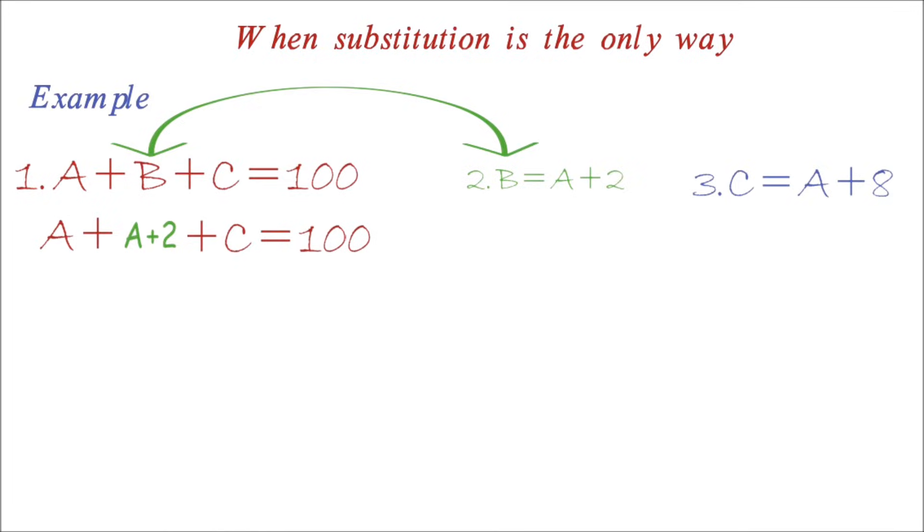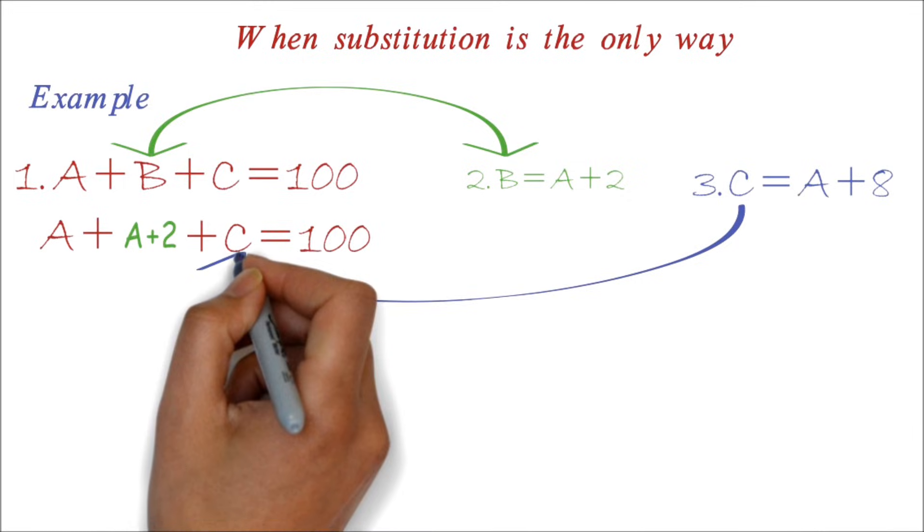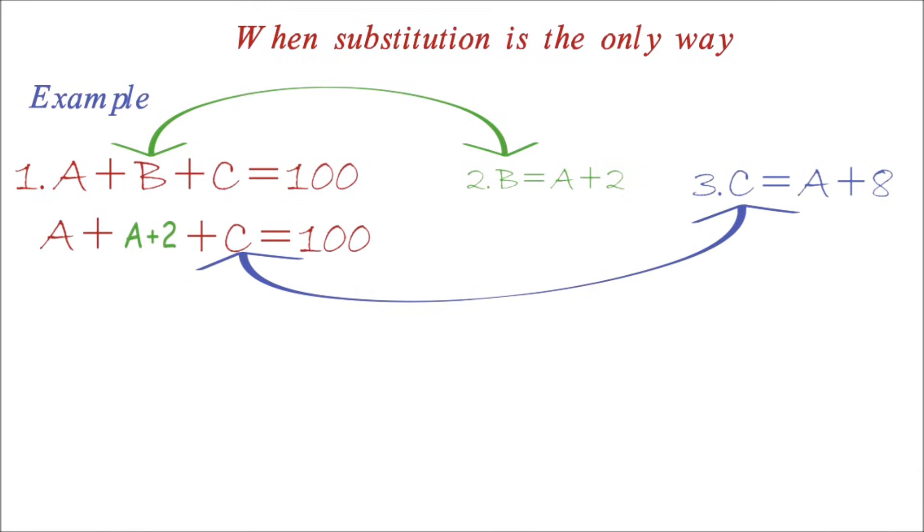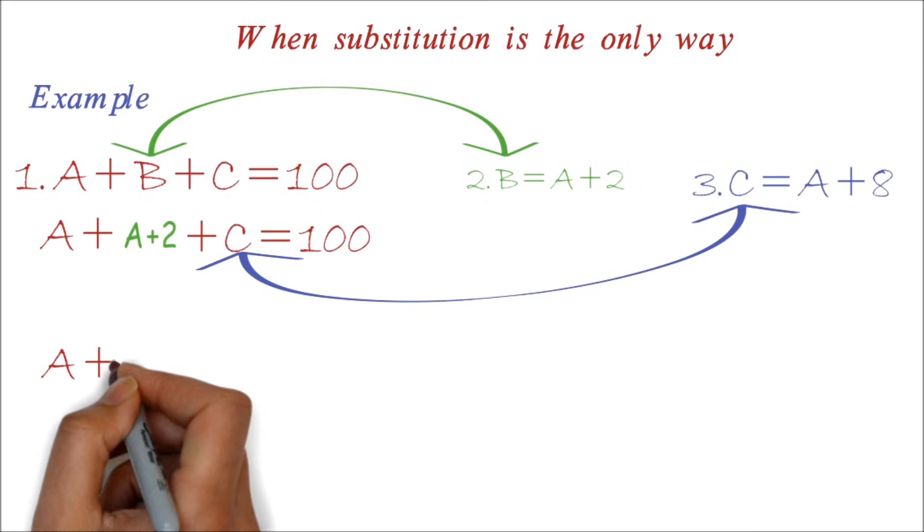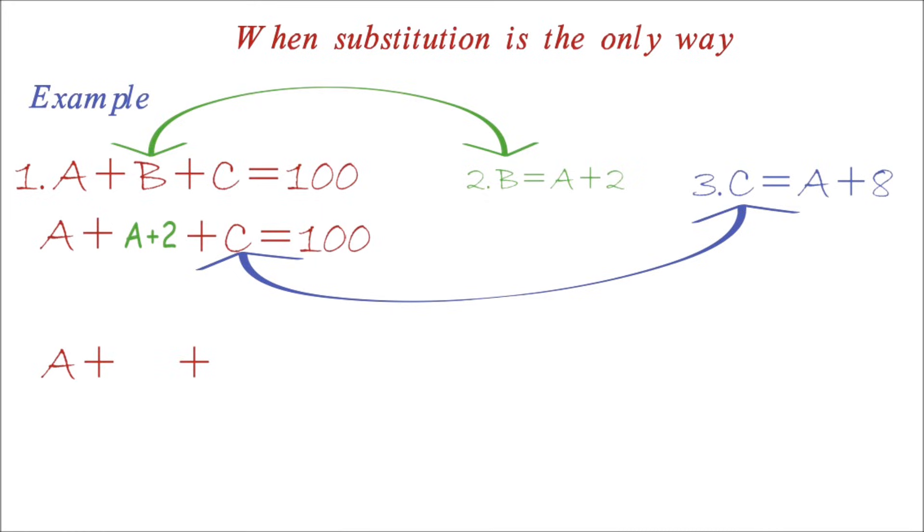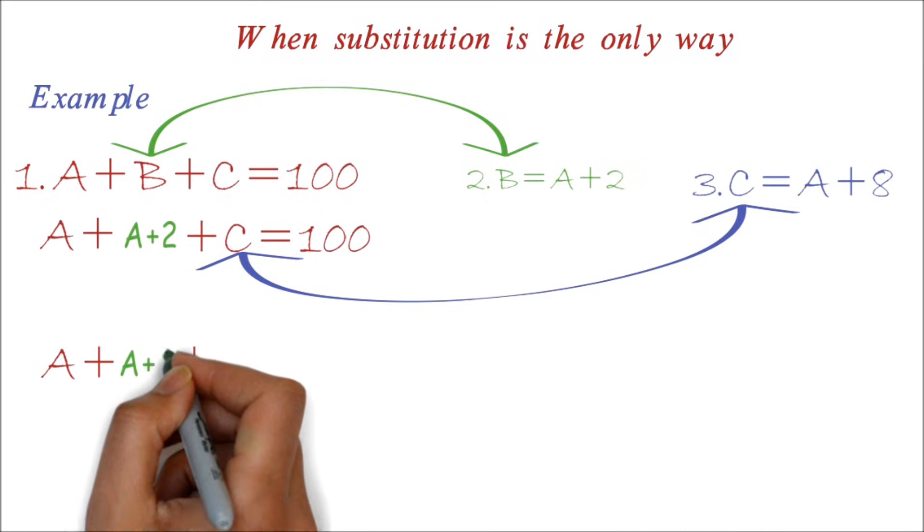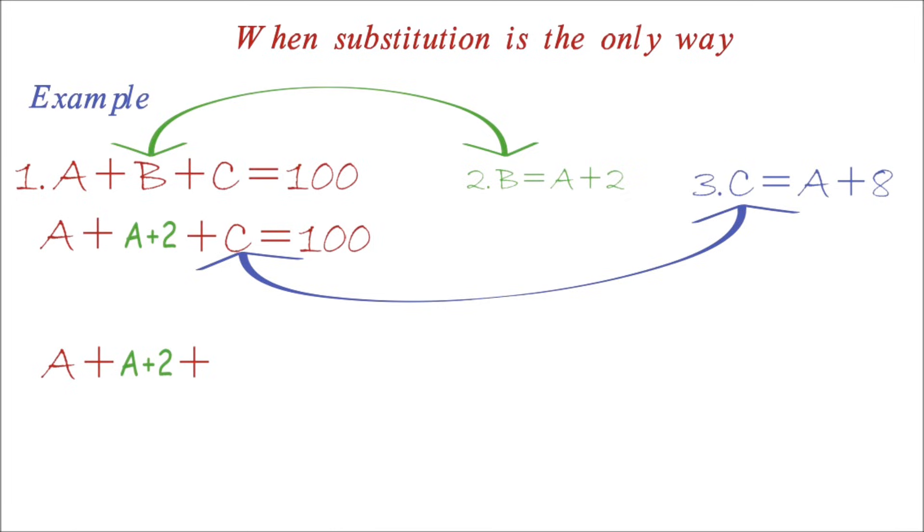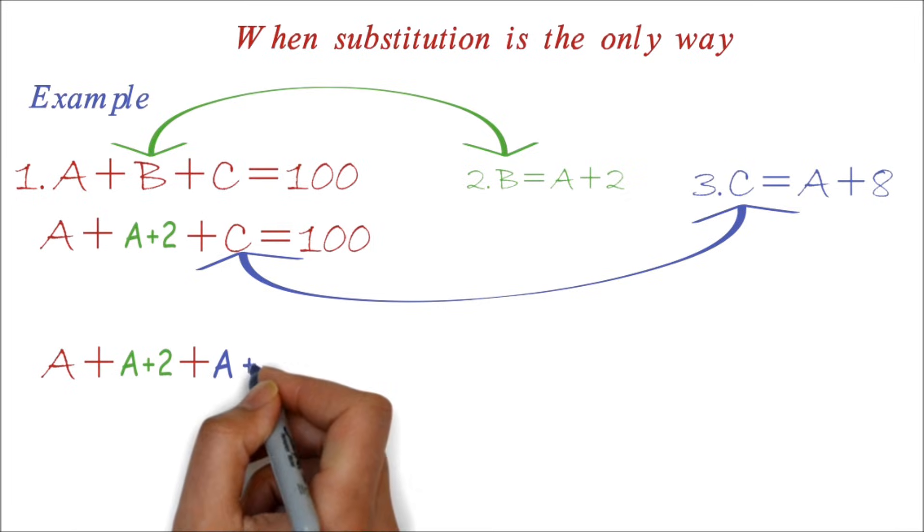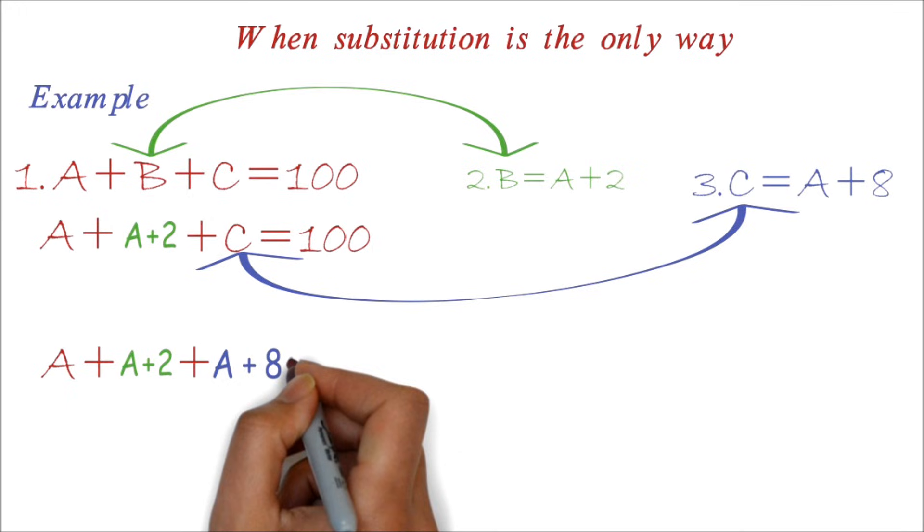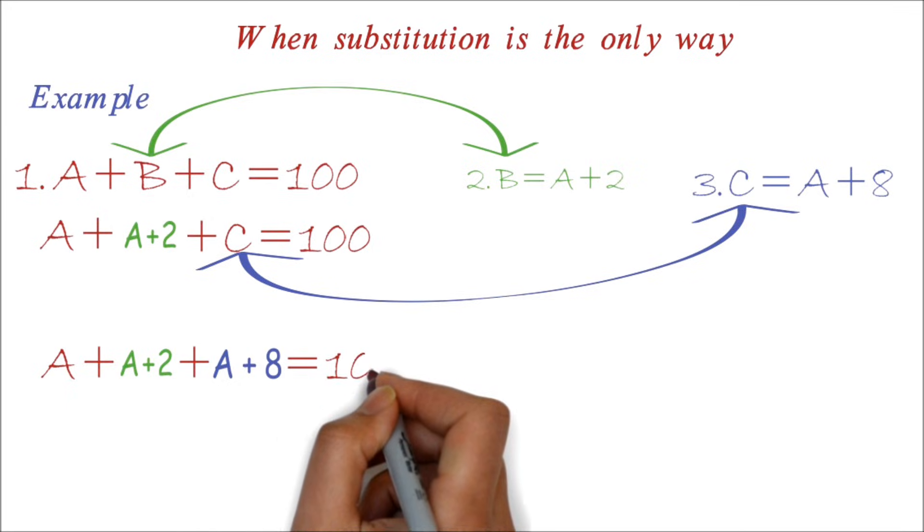We want to have just A terms in the first equation, so we want to substitute the C also. We substitute for the C and have A plus A plus 2 plus A plus 8 equals 100.